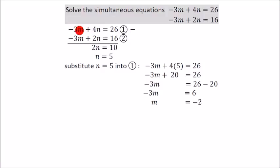This is the same as this, so when you subtract them, you get 0. Which is great because you want something to disappear and make things simpler, like you have here. Minus 3m take away minus 3m is 0.